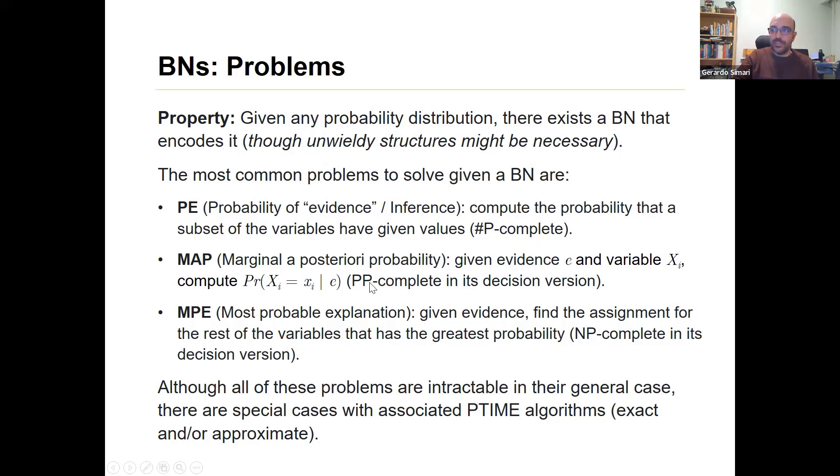And as you can see, I went over these, but these are all bad complexity classes. So sharp P-complete, PP-complete in the decision version, NP-complete is the nicest class and it's still a very intractable class in general. So all of these problems are intractable in their general case. But the good news with these models is that they have special cases with associated polynomial time algorithms that are either, depending on the case, either exact or approximate. So it's a very, it's a very noble model, the BNs.